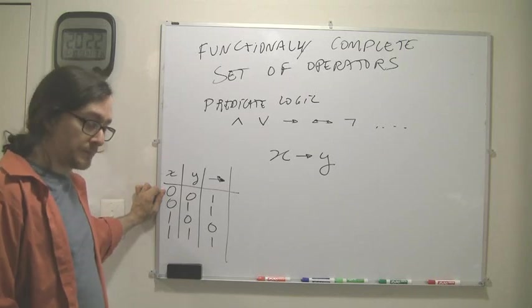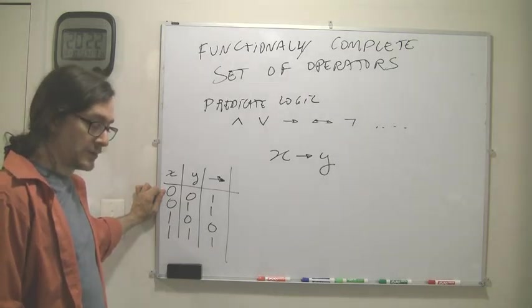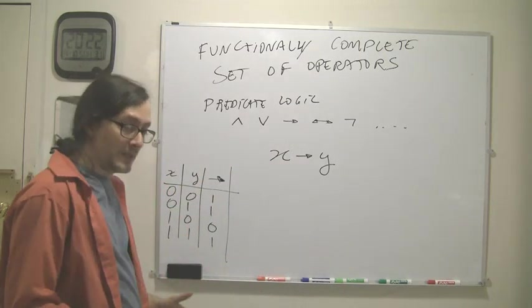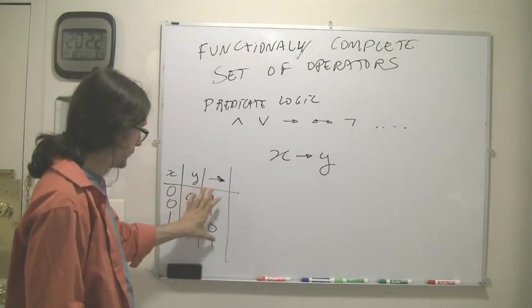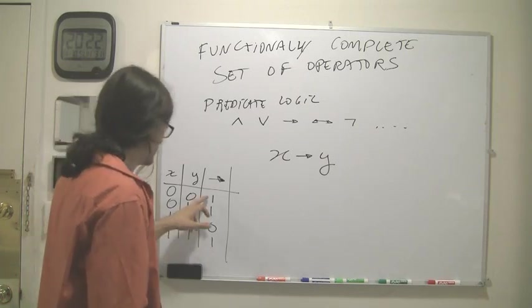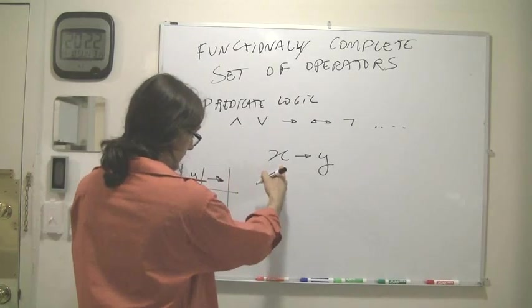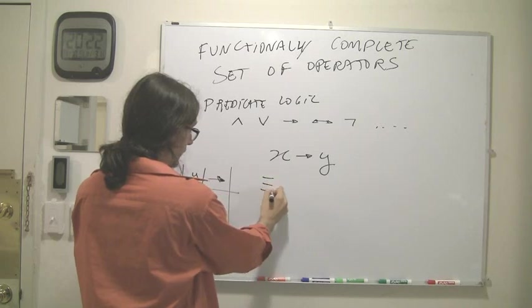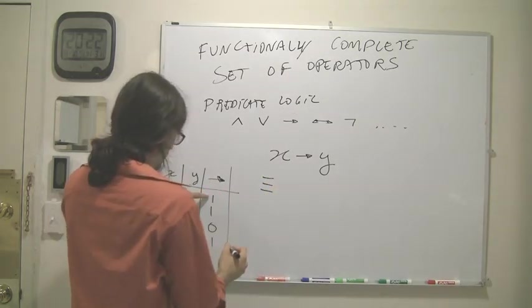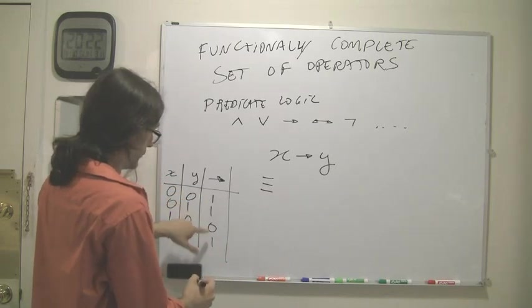Now, can we write this using only and, or, and not, and without using this operator at all? Well, we know we can, because we know how to go from a truth table to an expression in disjunctive normal form.